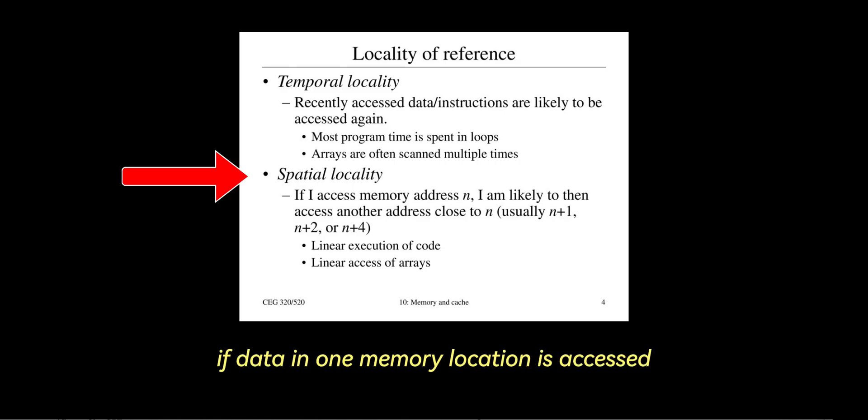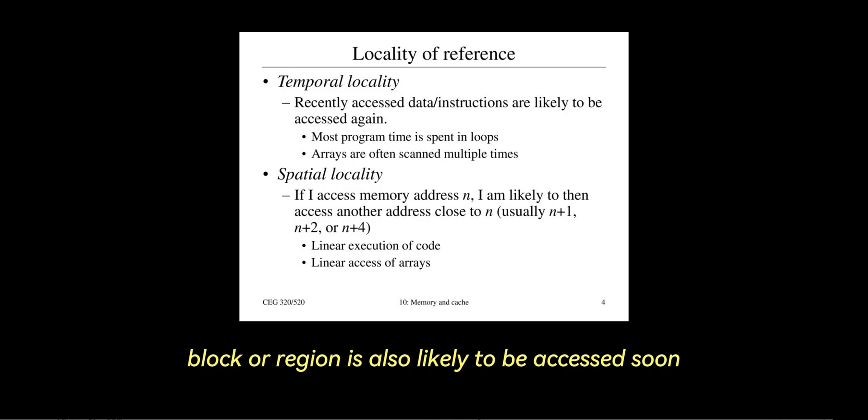In spatial locality, if data in one memory location is accessed, nearby data located within the same memory block or region is also likely to be accessed soon. Caches tend to load blocks of data into cache lines to optimize for this.